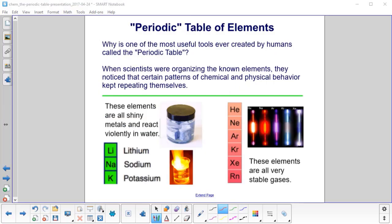Why is one of the most useful tools ever created by humans called the periodic table? When scientists started organizing the known elements in the 1800s, they noticed that certain patterns of chemical and physical behavior kept repeating themselves, a pattern for example.